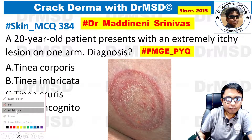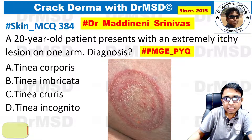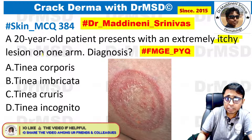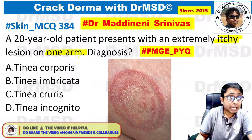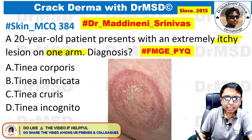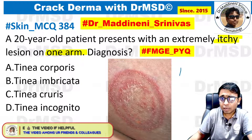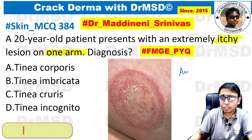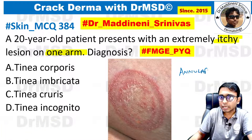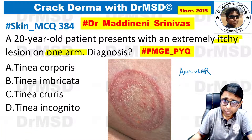Whenever you get to see this kind of a clinical picture — there is an extremely itchy lesion which is present unilaterally, that is an asymmetrical lesion — and if you look at the clinical picture, you are able to see there is an annular lesion with an erythematous rim and there is some scaling.